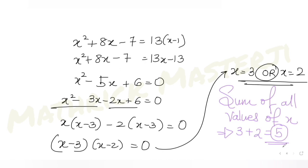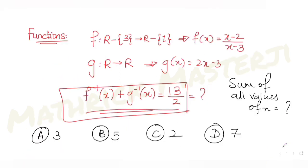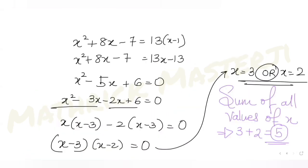The question asks for the sum of all values of x, which is 3 plus 2, equals 5. That matches option B, so B is the correct answer for this question.